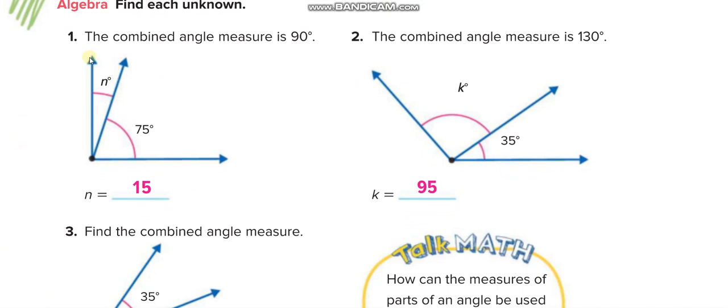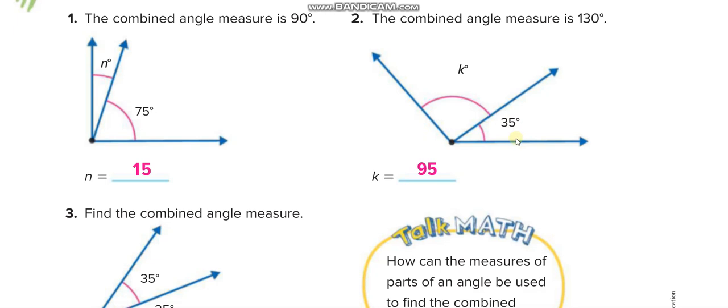Let us move down. Here you can see it is a straight line, it means the total from this ray to that ray is 90. If up till this ray is 75, so what is n? 90 minus 75, that is 15. Here from this ray to this ray, they told you the total combined angle measured is 130 degrees. If this one is 35, so you minus this 35 from 130, that is 95. So k is 95 degrees.